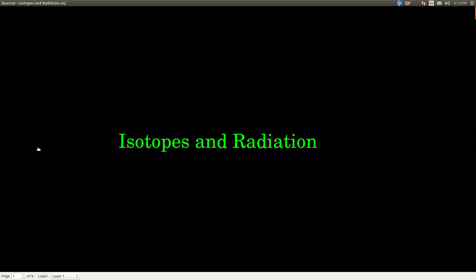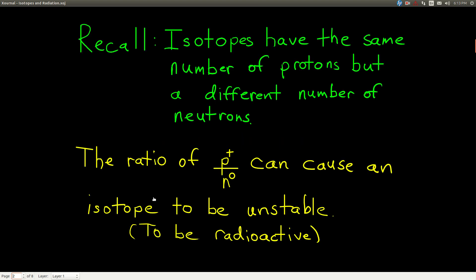In this video, we're going to talk about isotopes, specifically what we call radioactive isotopes and radiation that they emit. So remember, an isotope - isotopes have the same number of protons as each other, but they have different numbers of neutrons. They're the same element, but they have a different mass.